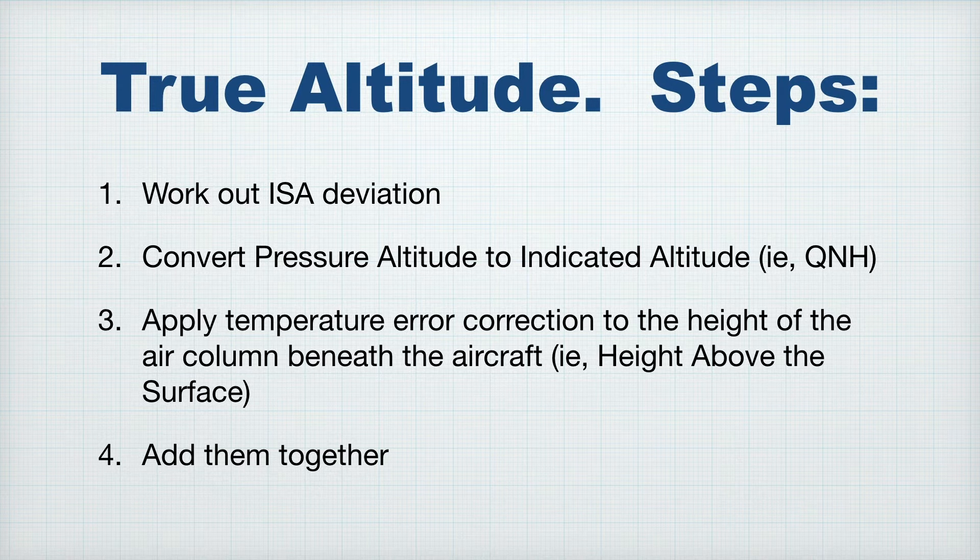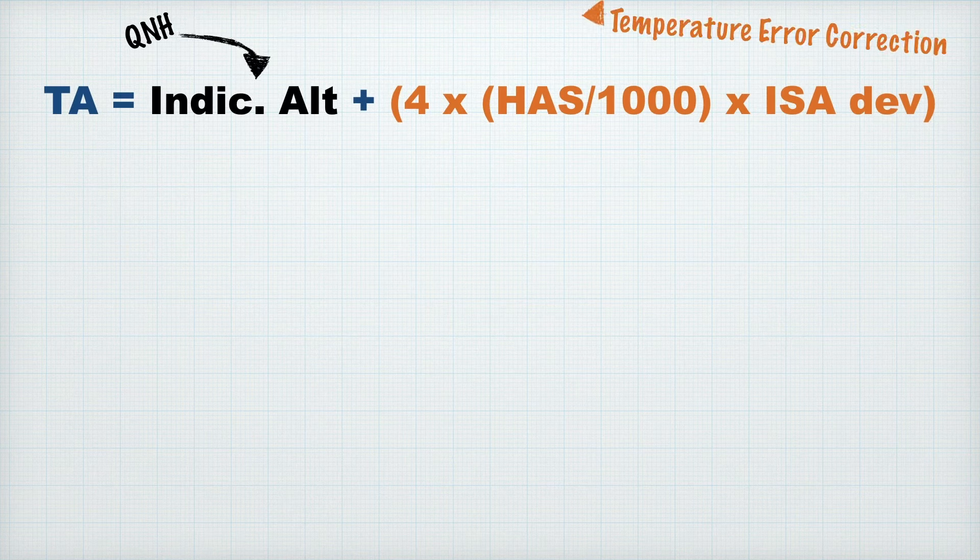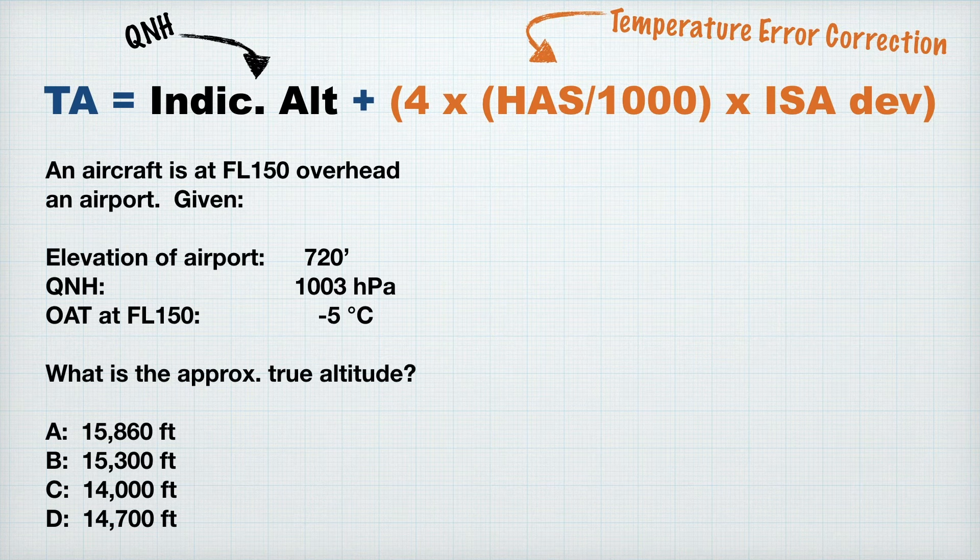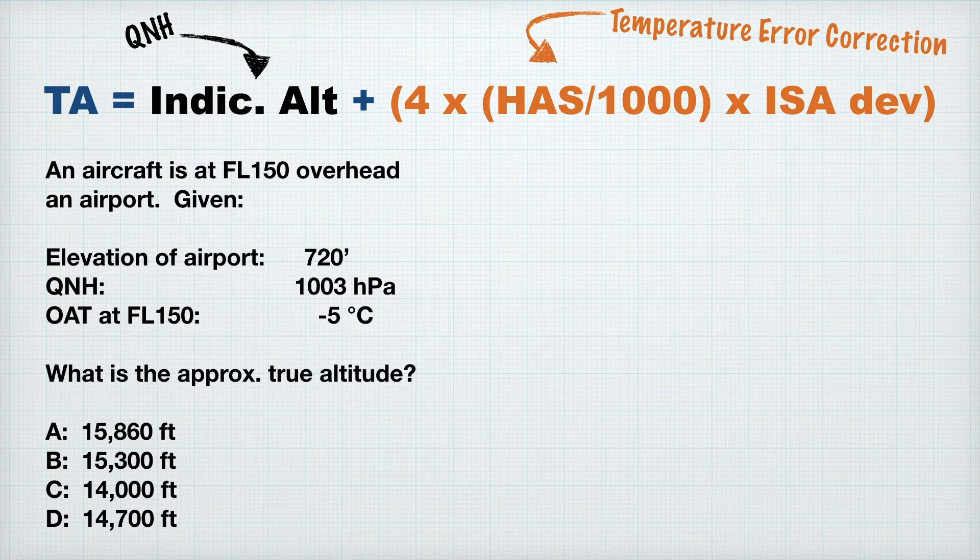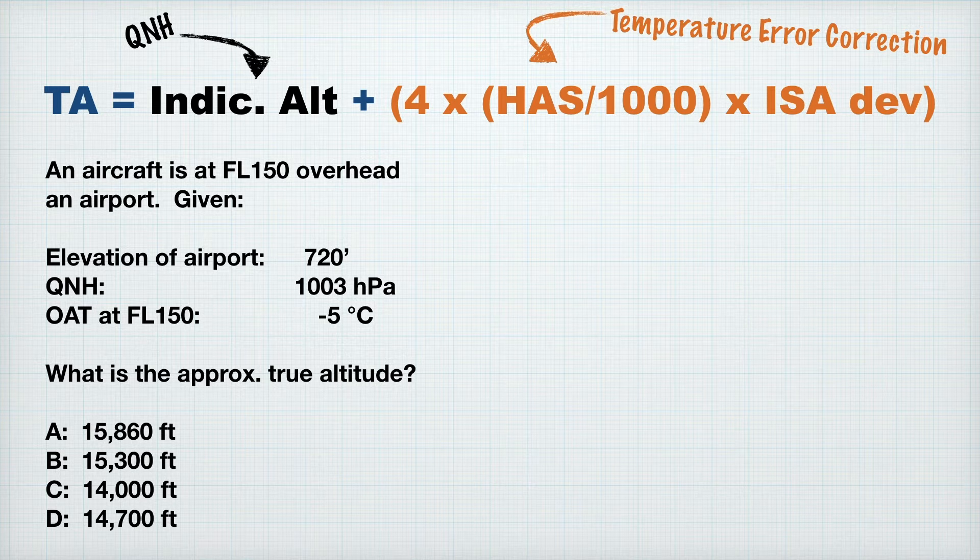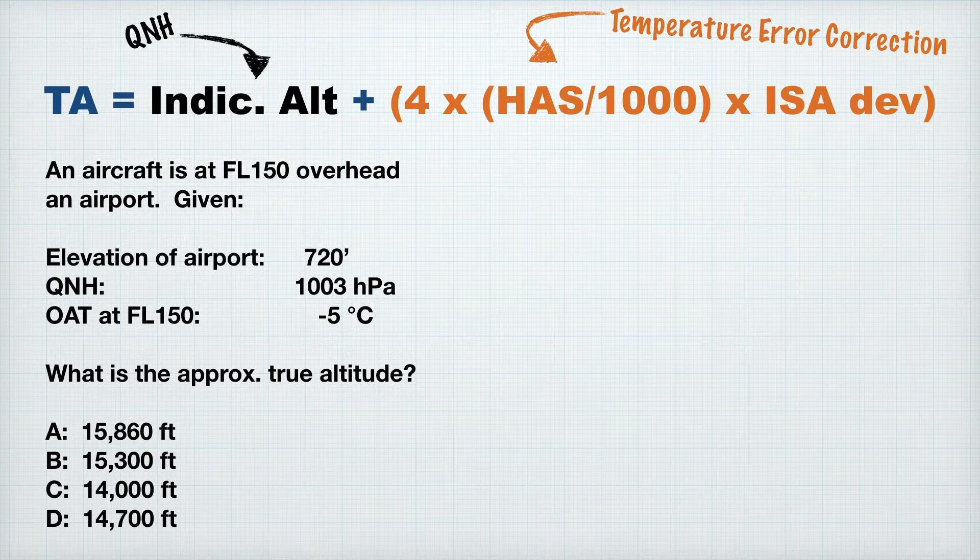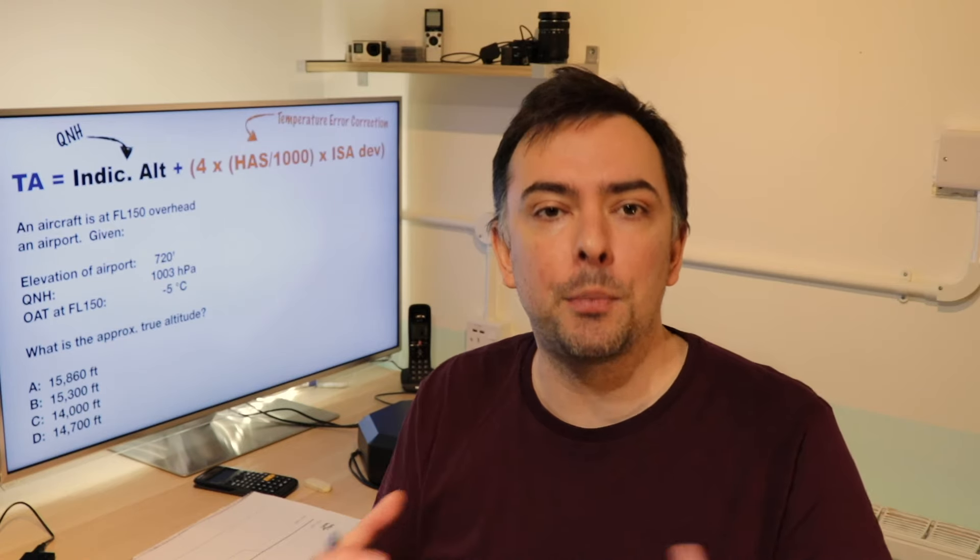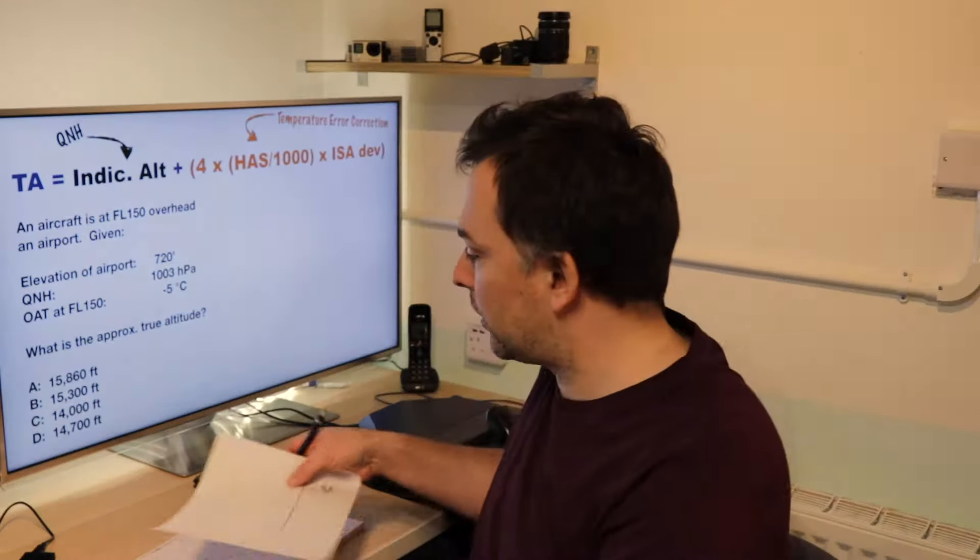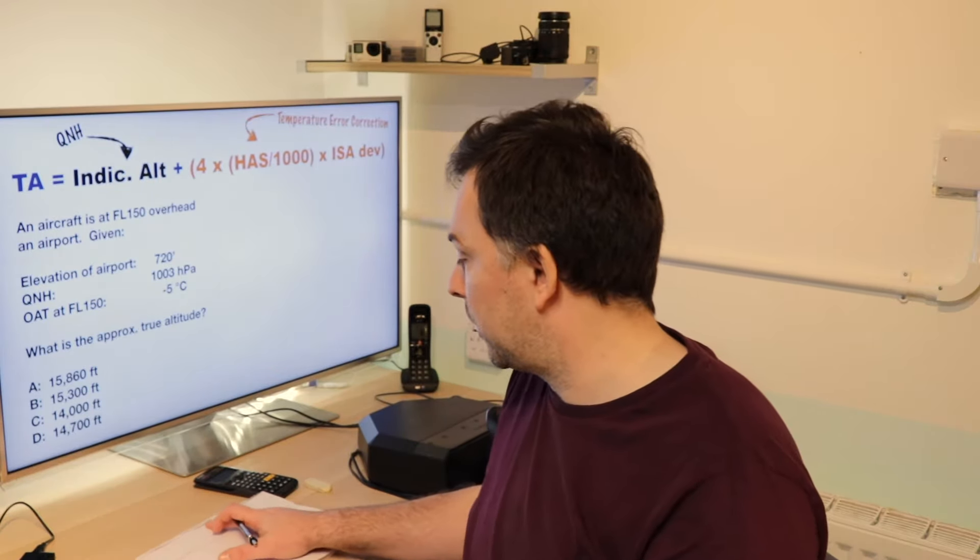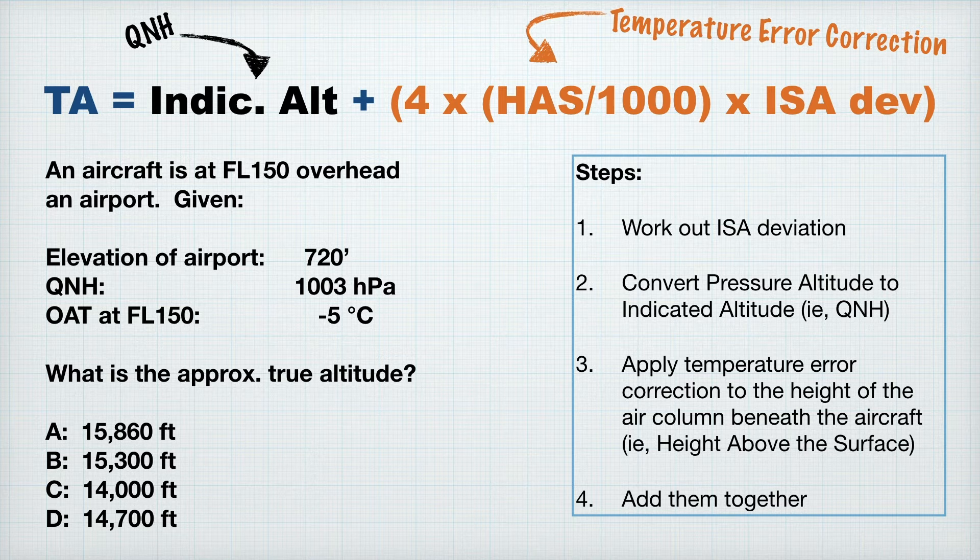Okay, so let's take a look at a question. Here's our formula. True altitude is indicated altitude, and then we've got the temperature error correction to make. The question says: an aircraft is at flight level 150 overhead an airport. Given the elevation of the airport is 720 feet, the QNH is 1003 hectopascals, the outside air temperature at flight level 150 is minus 5 degrees Celsius. What is the approximate true altitude? Grab yourself one of these sheets, or make a little sketch that looks something like it, and let's go for it. Here's a reminder of what the steps are along the way.